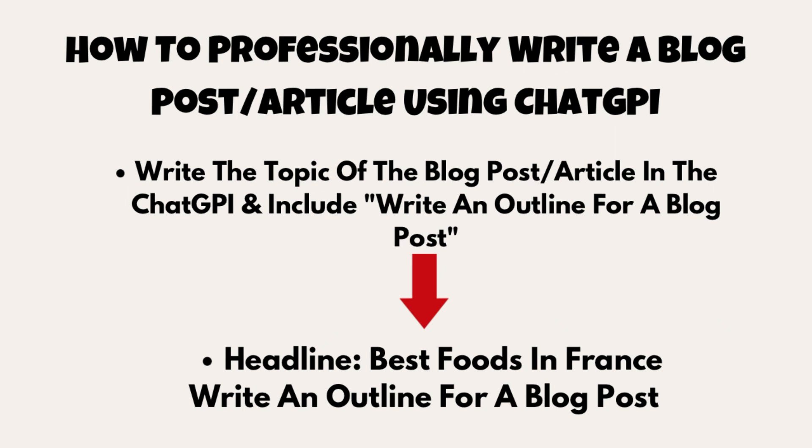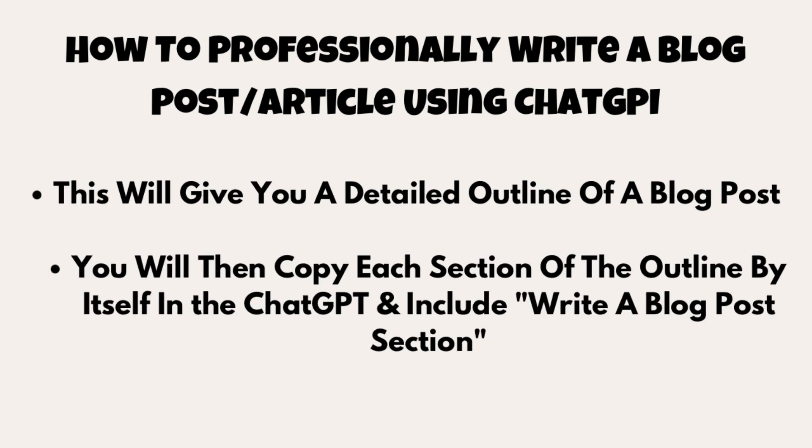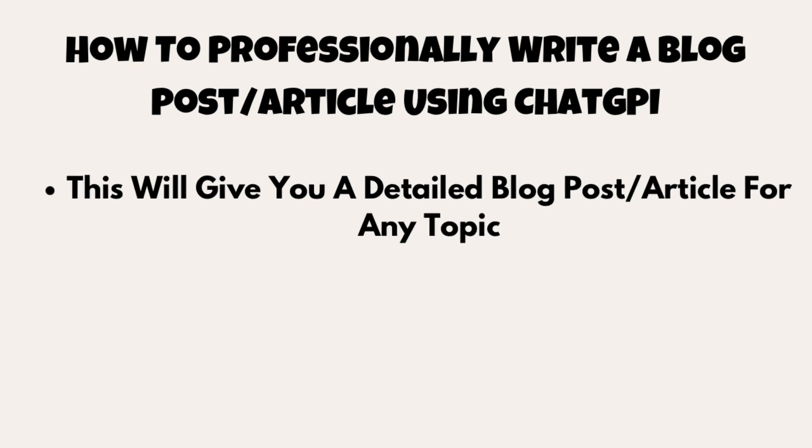To do this, first you need to write the topic of your blog post or article in ChatGPT AI and include 'write an outline for a blog post.' You would put a headline and then your topic, then add 'write an outline for a blog post.' This will give you a detailed outline. You then copy each section of the outline by itself into ChatGPT AI and include 'write a blog post section,' and this will give you a detailed blog post or article for any topic.